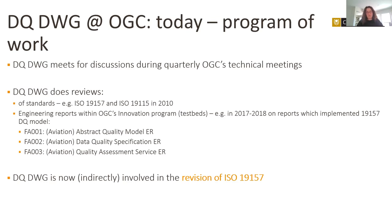At this moment the Data Quality Domain Working Group is indirectly involved in the revision of ISO 19157. What 'indirectly' means is that the working group does not participate formally in the revision process, but project members nominated through standards bodies are also members of the Data Quality Domain Working Group. Let me conclude this talk with some information about the revision of ISO 19157 — the data quality standard.